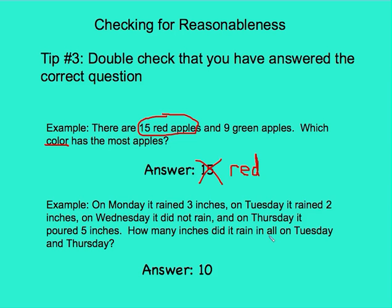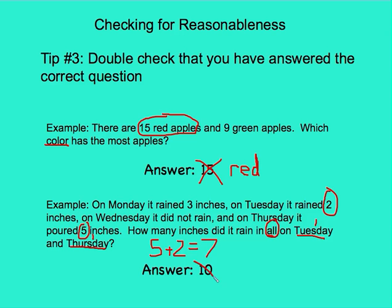Now we just need to check that I answered the correct question. The question is asking how many inches did it rain in all for Tuesday and Thursday. If you did not pay close attention, you may have only stopped reading at the word 'all.' But I don't want all days — I want to know how much it rained on just two days: Tuesday and Thursday. On Tuesday it rained two inches, and on Thursday it poured five inches. Since I'm getting bigger, five plus two should give me an answer of seven. So I know my answer of ten was not reasonable — this person also added Monday's three inches, but I only care about Tuesday and Thursday.